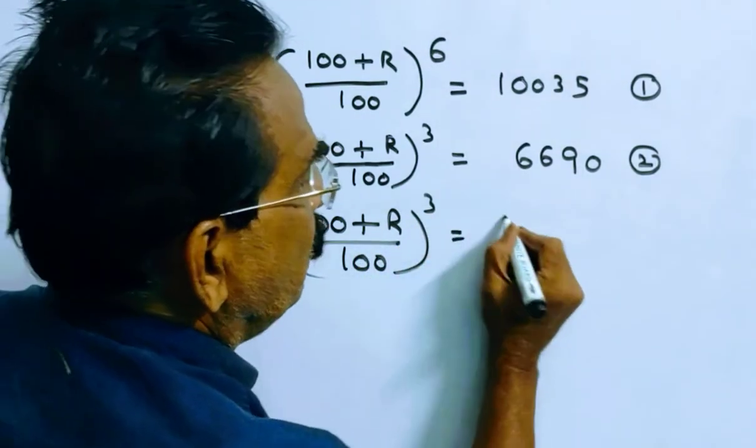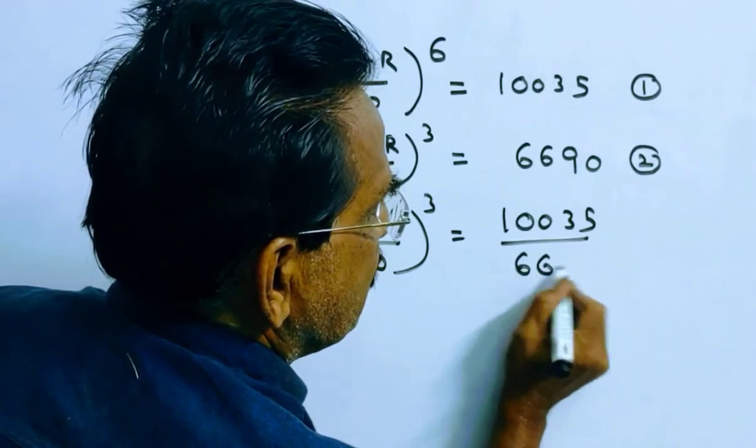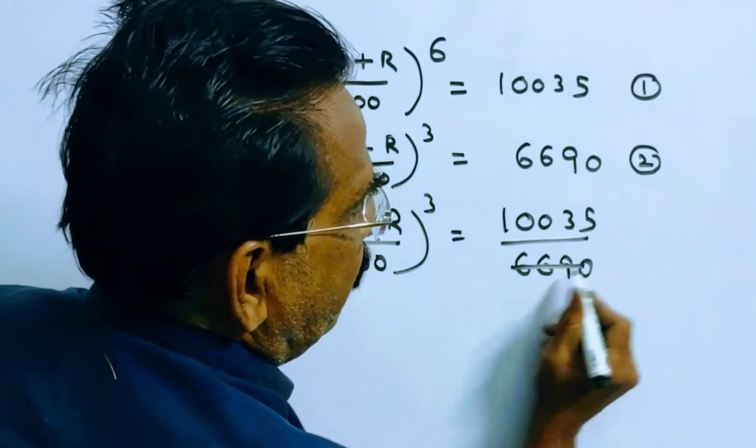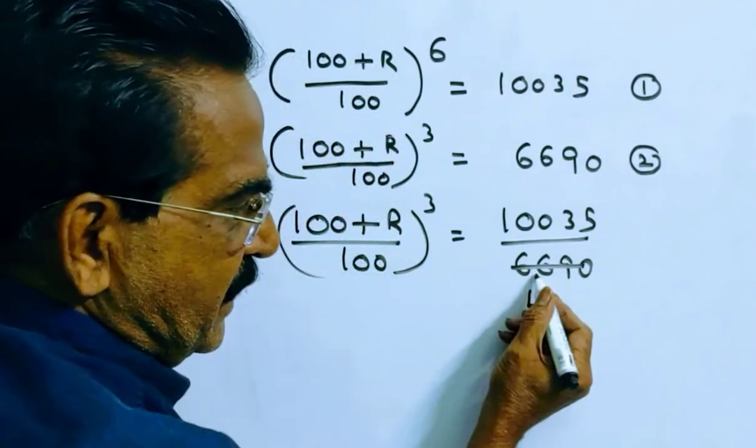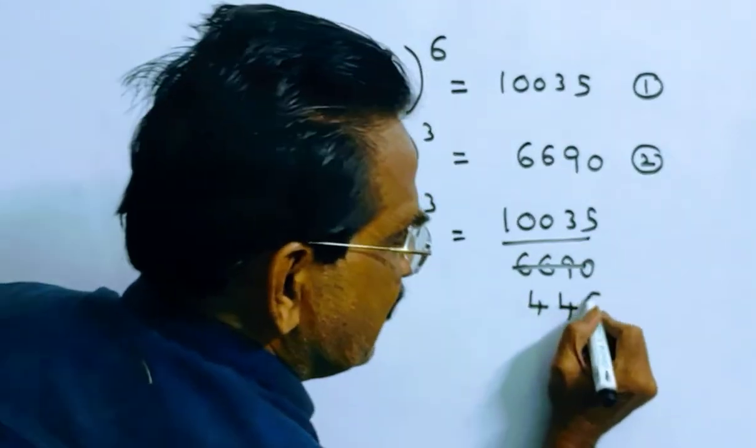So this is equal to 10,035 by 6,690. 15, 4s, 60, 69. Again 15, 4s, 15, 6s.